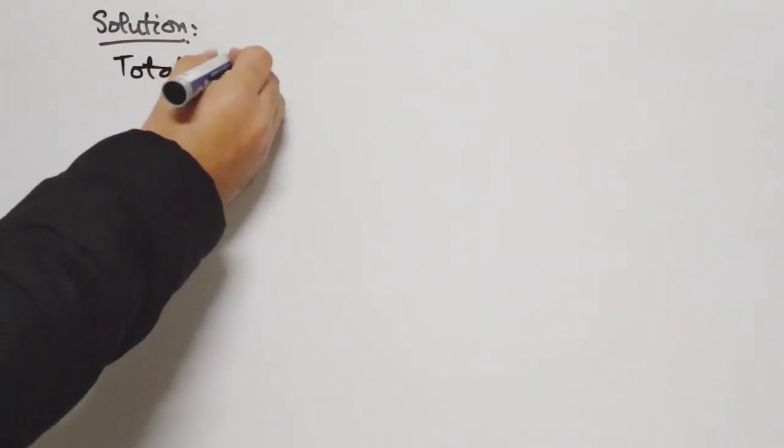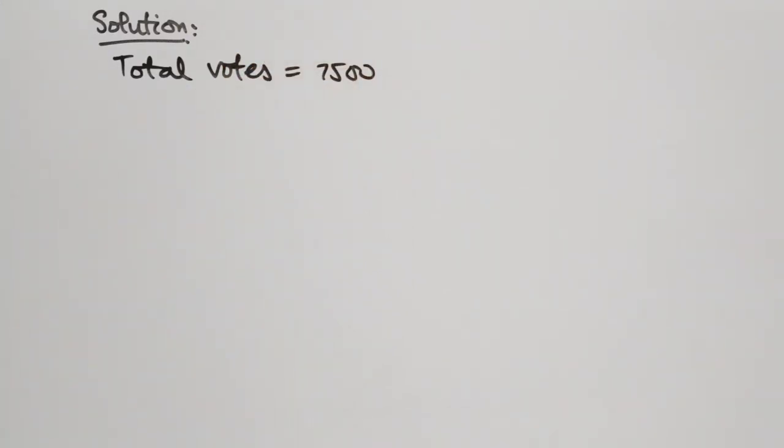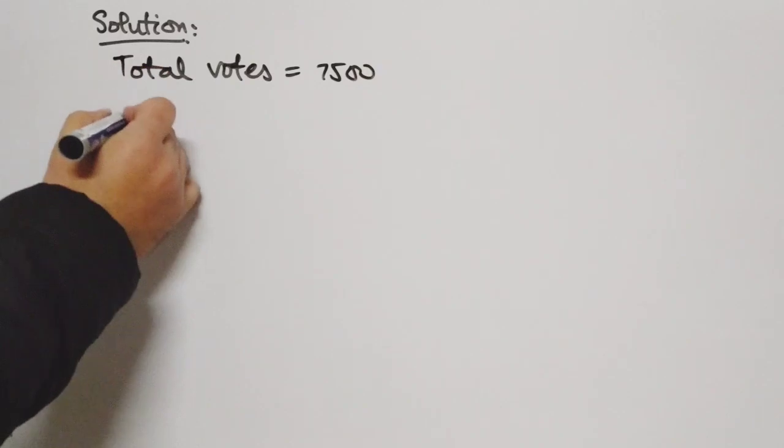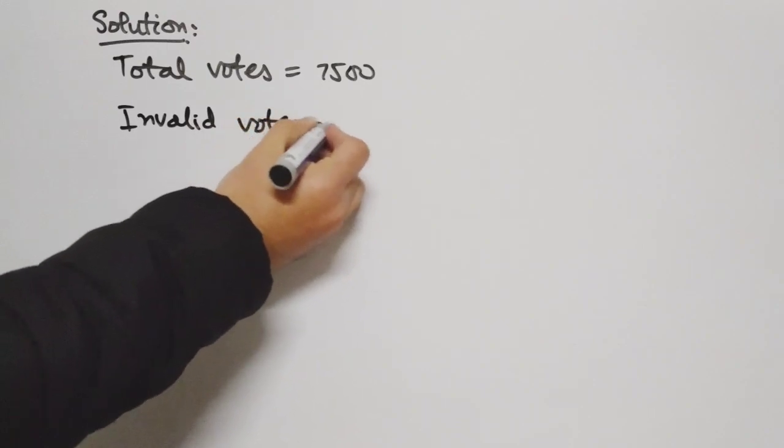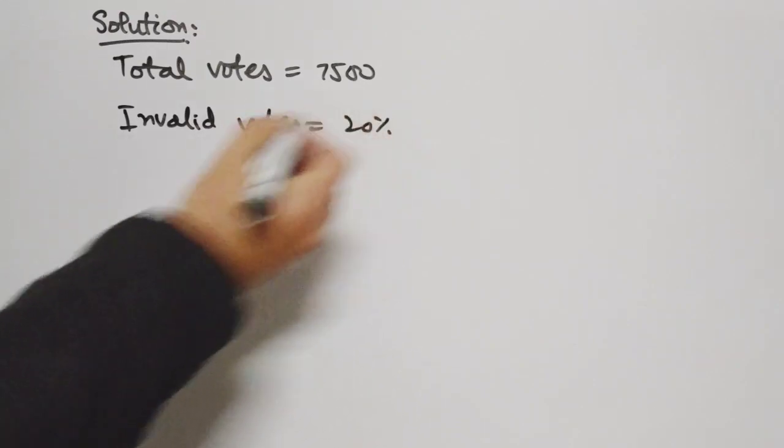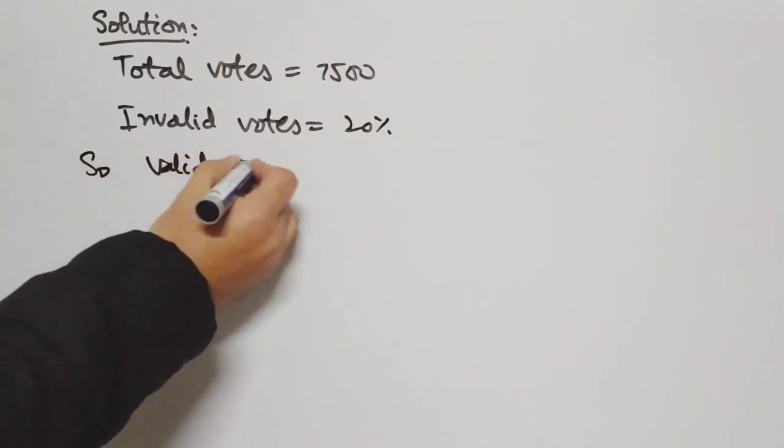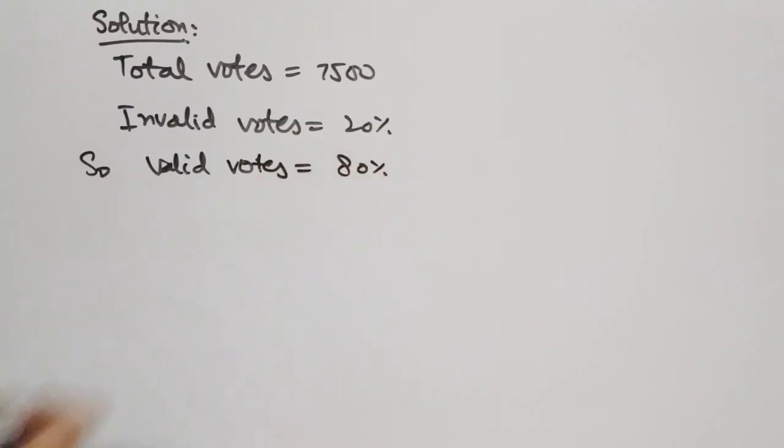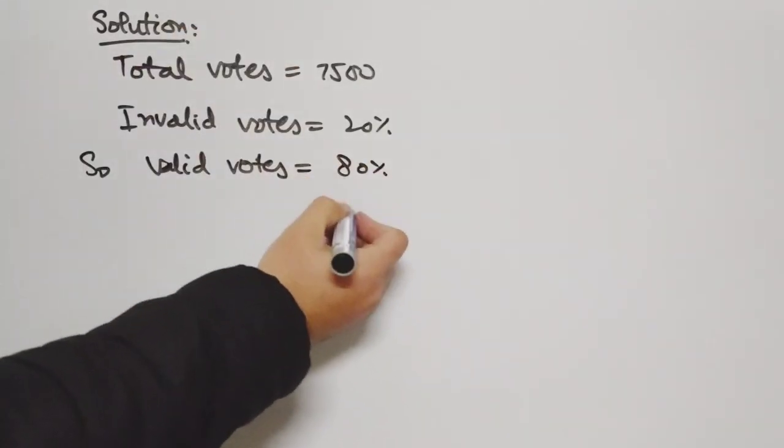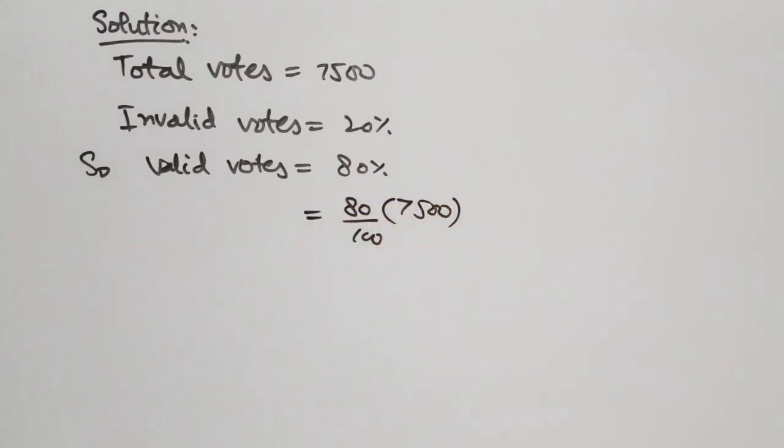Total votes is equal to 7,500. According to the question, invalid votes is equal to 20%. So the valid votes will be 80%. So number of valid votes will be 80 divided by 100 multiplied by 7,500.